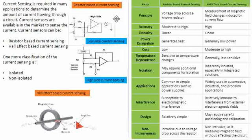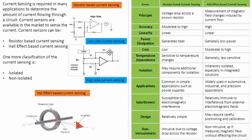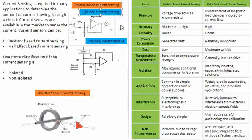In resistor-based current sensing itself there are two types. One is called low-side current sensing, where the sensor resistor is placed after the load. The other is high-side current sensing, where the sensor resistor is placed above the load. We sense the voltage, amplify it, and give it to a microcontroller to process accordingly.